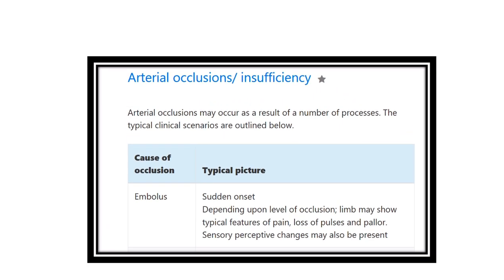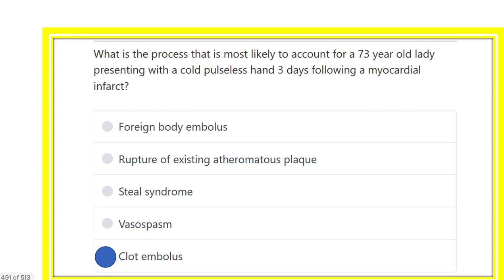Here you can see acute occlusive arterial insufficiency: one cause is embolus, which has a sudden onset depending upon the level of occlusion, with typical loss of pulse. Pallor and sensory changes may also be present. The obvious pathology here is the myocardial infarction — the myocardial muscle cannot contract properly, leading to stasis of blood and formation of mural thrombus. This mural thrombus then dislodges, blocks small vessels, and causes the clinical picture. So the answer is clot embolus.